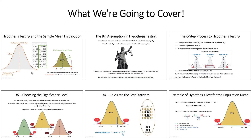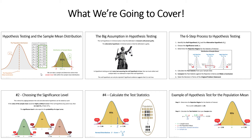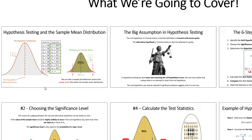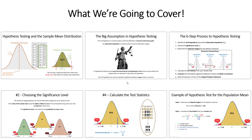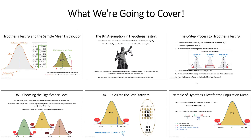In today's lecture we're going to start by talking about something called the sample mean distribution. Hypothesis testing is a form of inferential statistics where we use sample data to make inferences about a population. To understand hypothesis testing, you have to understand the sample mean distribution because everything we'll talk about later in the lecture is based on it. Then I want to talk about the big assumption in hypothesis testing — our hypothesis test and entire process is based on one giant assumption, and it's important we cover this before we get into the six-step process to hypothesis testing.